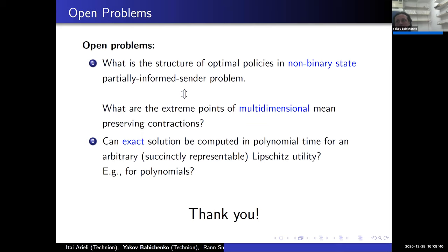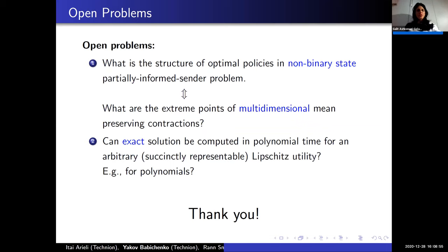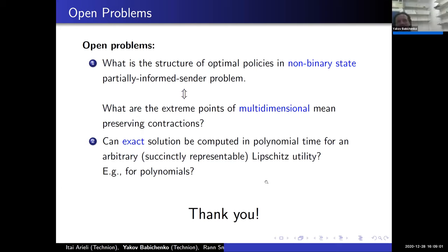Are there any questions? One question: in the examples shown, finitely many intervals were used — is there a class of utility functions for which you always get an optimal policy with finitely many intervals? Yes — it relates to the number of switches from concavity to convexity. If the number of switching points is at most N, then you will not need more than 2N intervals, though we suspect it is closer to N or N/2. The proof of Theorem 2 constructs explicit examples requiring countably many intervals. Thank you again to Yakov for this interesting talk.